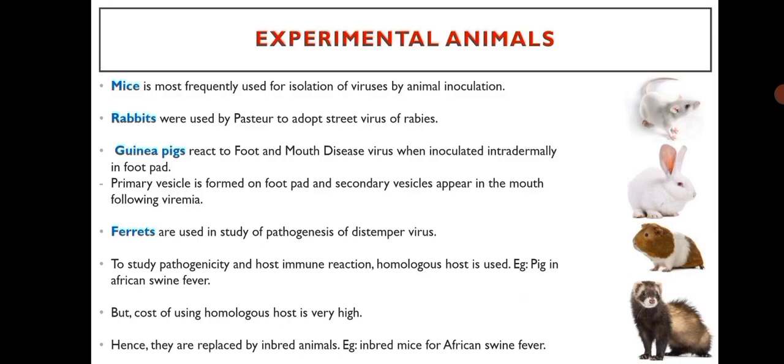Ferrets are used in the study of pathogenesis of canine distemper virus. To study pathogenicity and host immune reaction, homologous host is used, such as pigs in case of African swine fever. However, the cost of using homologous host is very high, hence they are replaced by inbred animals — for example, inbred mice for African swine fever cultivation.